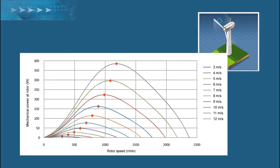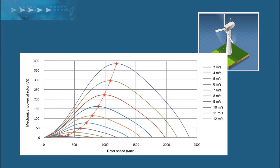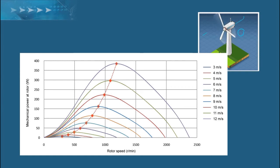Each line on this graph represents the power available at the given wind speed. The maximum power points follow a path that is proportional to the cubic of the wind speed. The goal of a good wind generator controller is to change the current output of the generator to reach the speed that provides the maximum power for each wind speed.